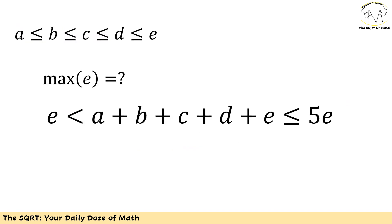To solve this problem, I'm going to start with one assumption: I'm going to assume that a is the lowest value and e is the highest value among these numbers. In other words, a ≤ b ≤ c ≤ d ≤ e. This is just one assumption — you can assume something else and proceed accordingly.